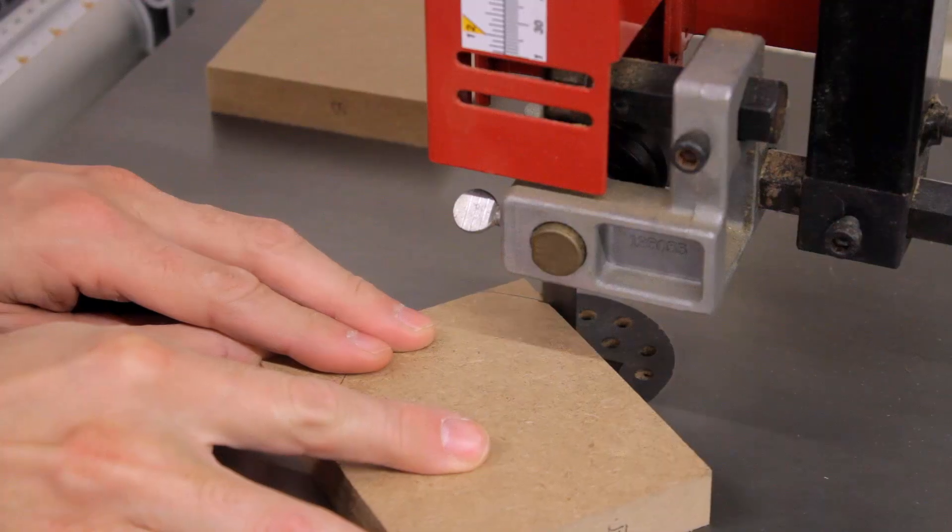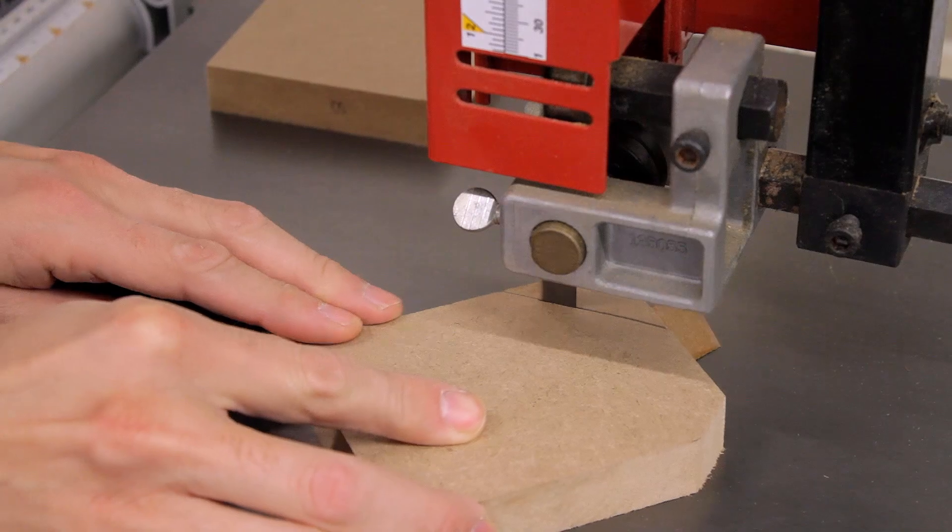I cut the back and sides at the table saw and then beveled the front edge of the sides a bit at the bandsaw.